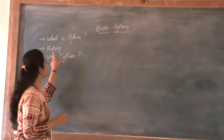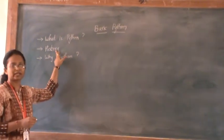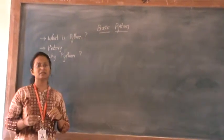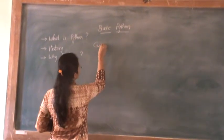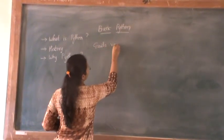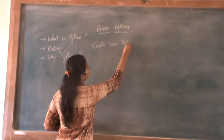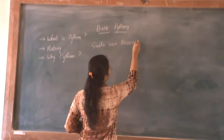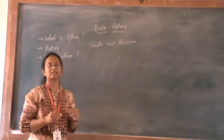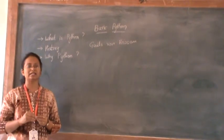Now who has developed Python? What is the history behind Python? The person named Guido van Rossum developed this Python programming language in the 1990s in Netherlands.